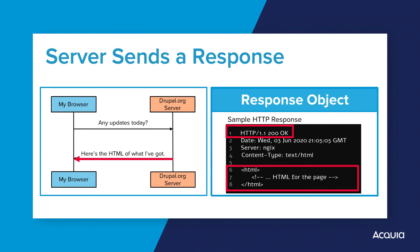As an overview, codes in the 200 range indicate that the request was successfully received, understood, and accepted by the server. The 300 range indicates that further action needs to be taken to complete the request, such as a 301 permanent redirect. Codes at the 400 level indicate that the request contains bad syntax or cannot be fulfilled — for example, 404 Not Found or 403 Access Denied. 500-level codes indicate a server error. This request-response conversation is the fundamental process that drives all communication on the web. The most important fact to remember is this: regardless of the type of Drupal application you build, the imperative goal of a web application is always to understand each client request and return the appropriate response.